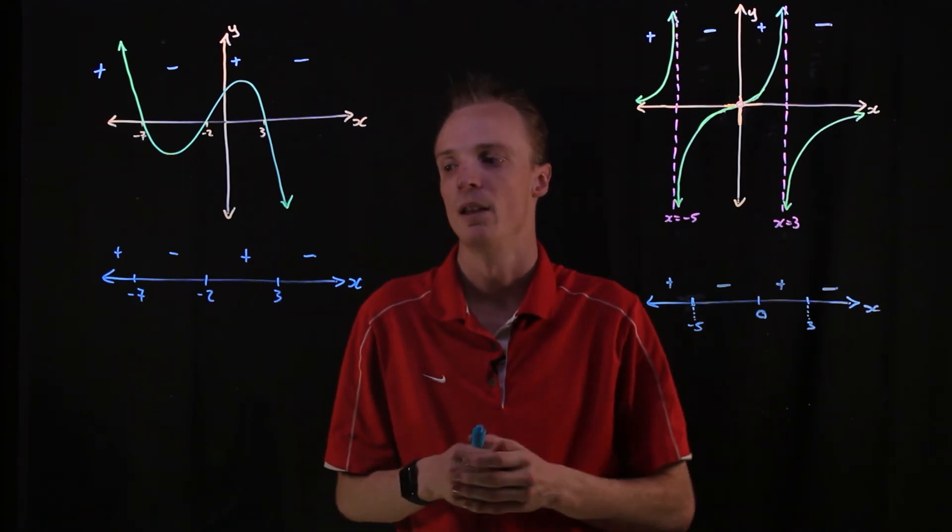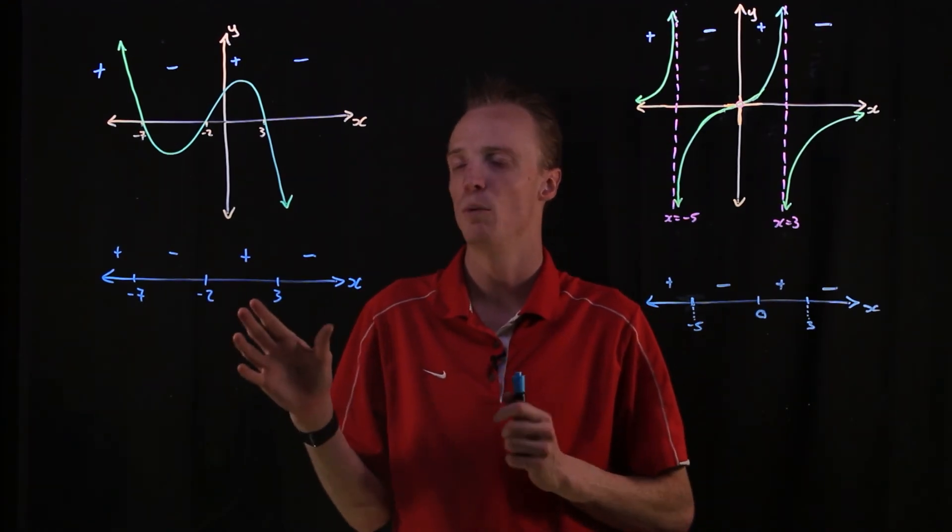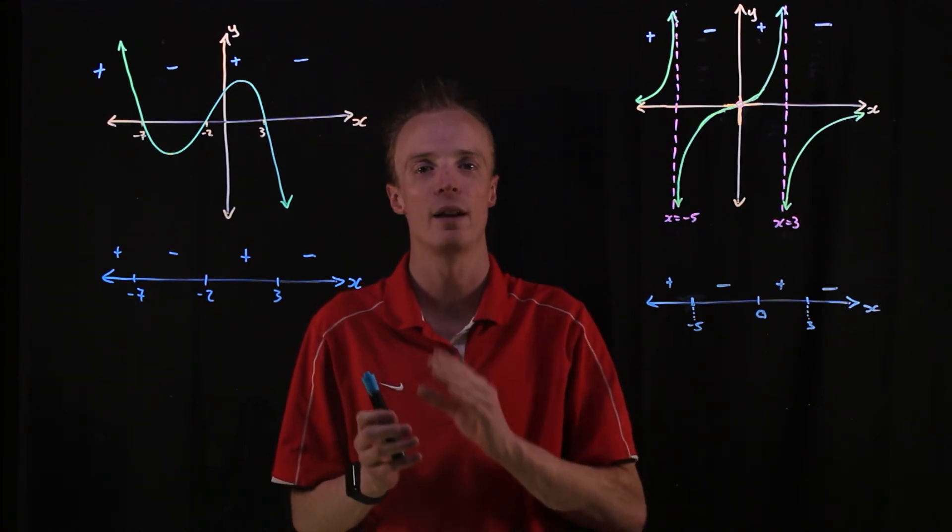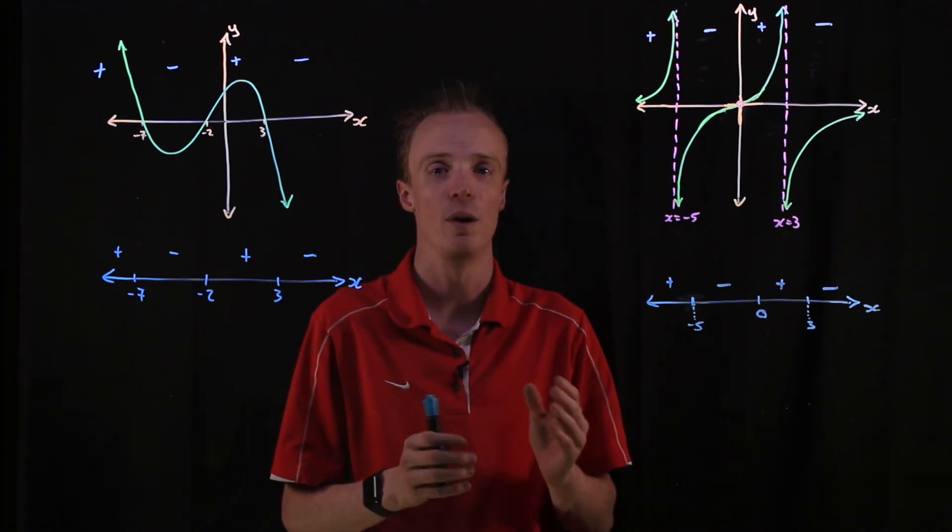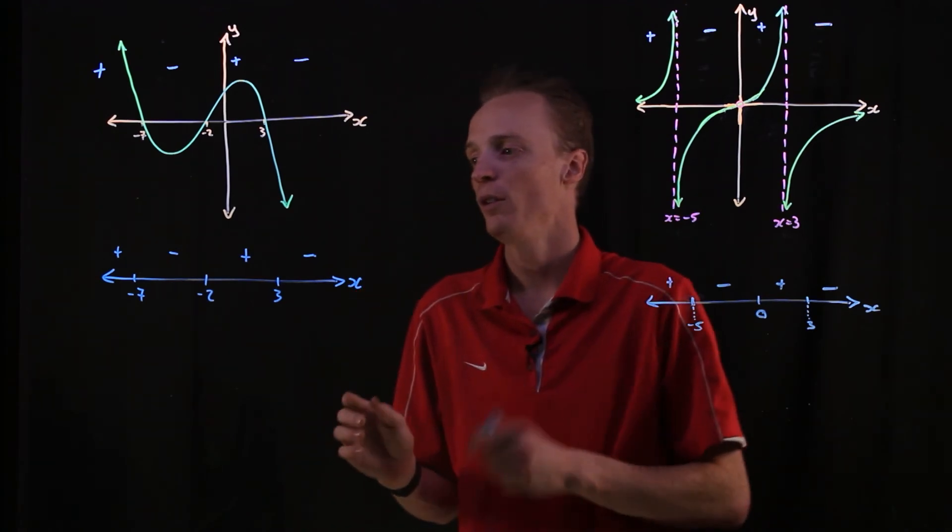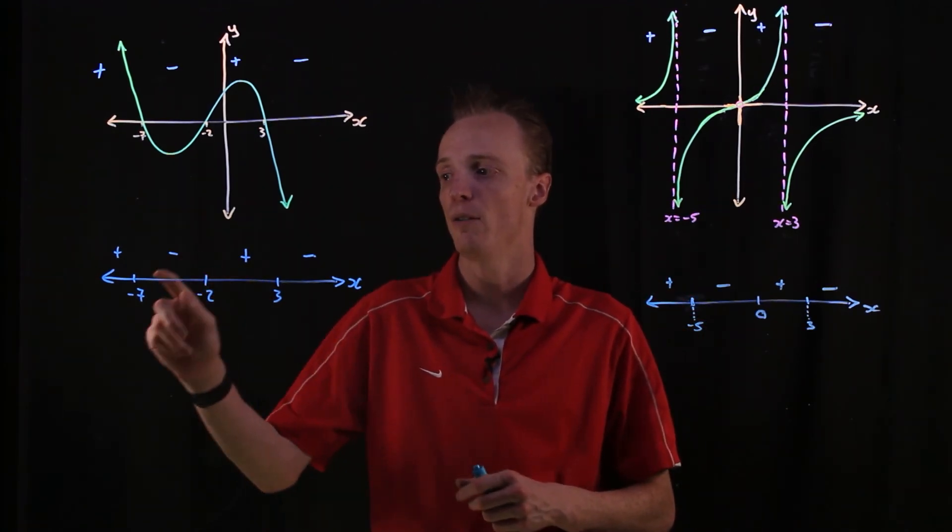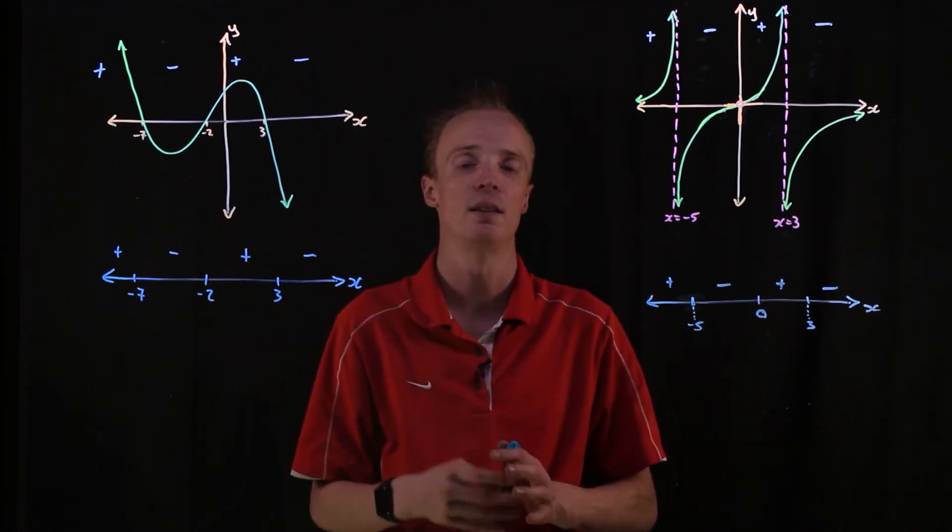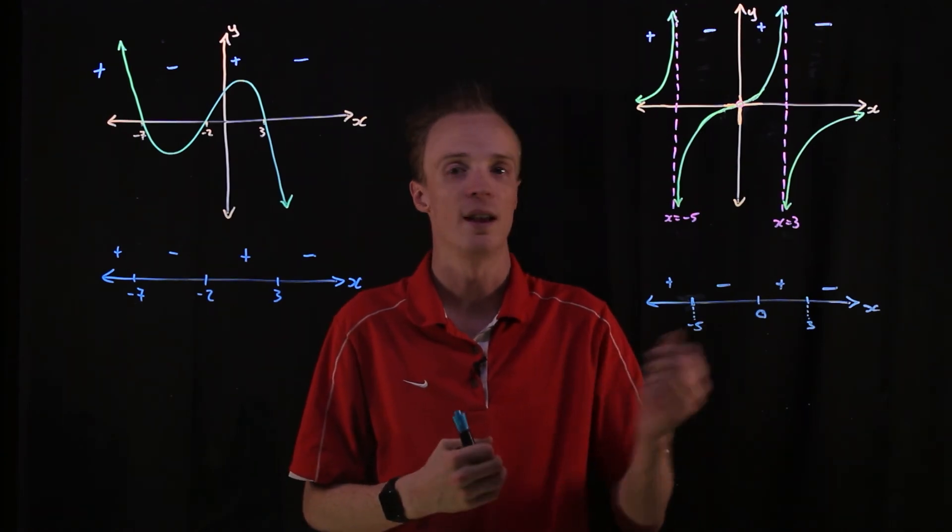So to recap, a sign diagram shows the important information of where it cuts the x-axis or where it has any vertical asymptotes. It also indicates whether the graph in between these points is above or below the x-axis.